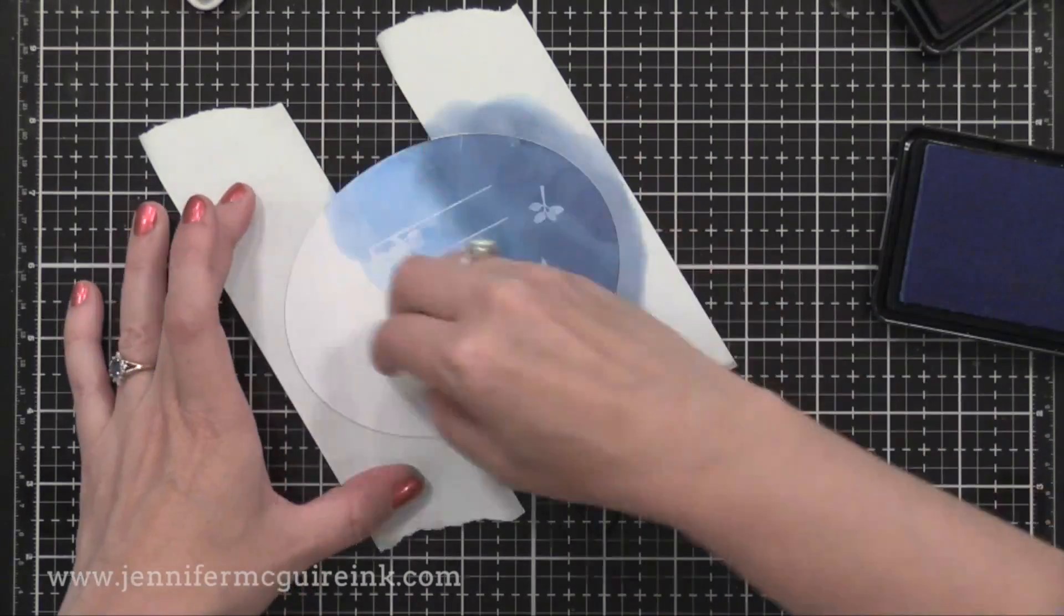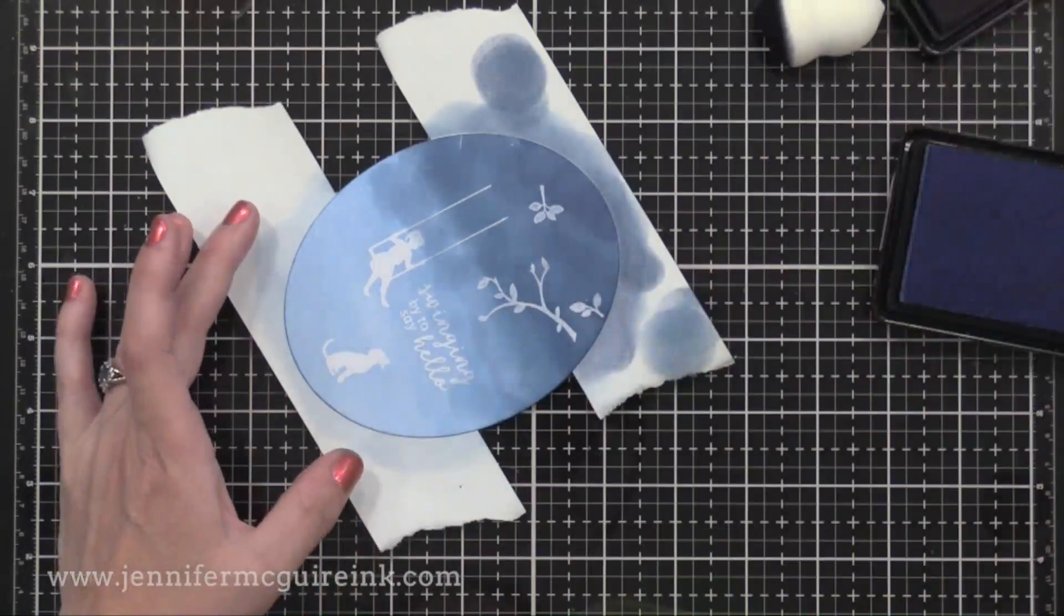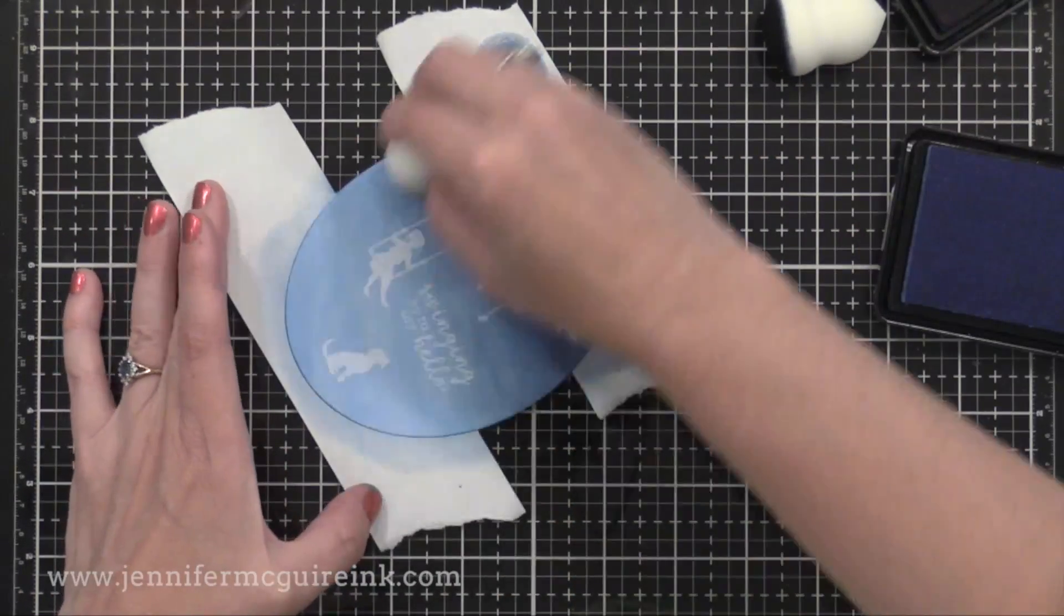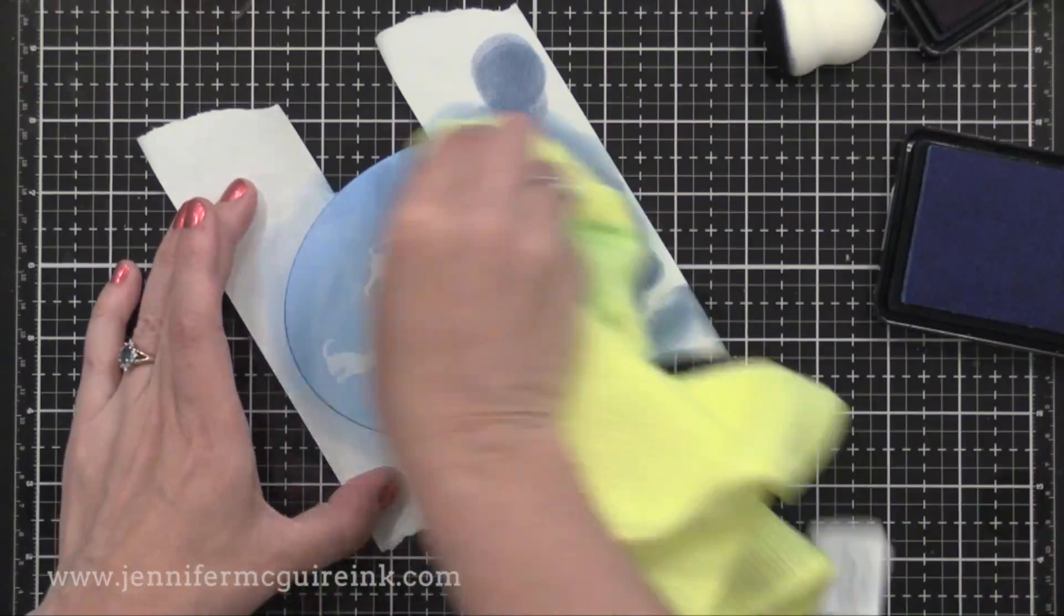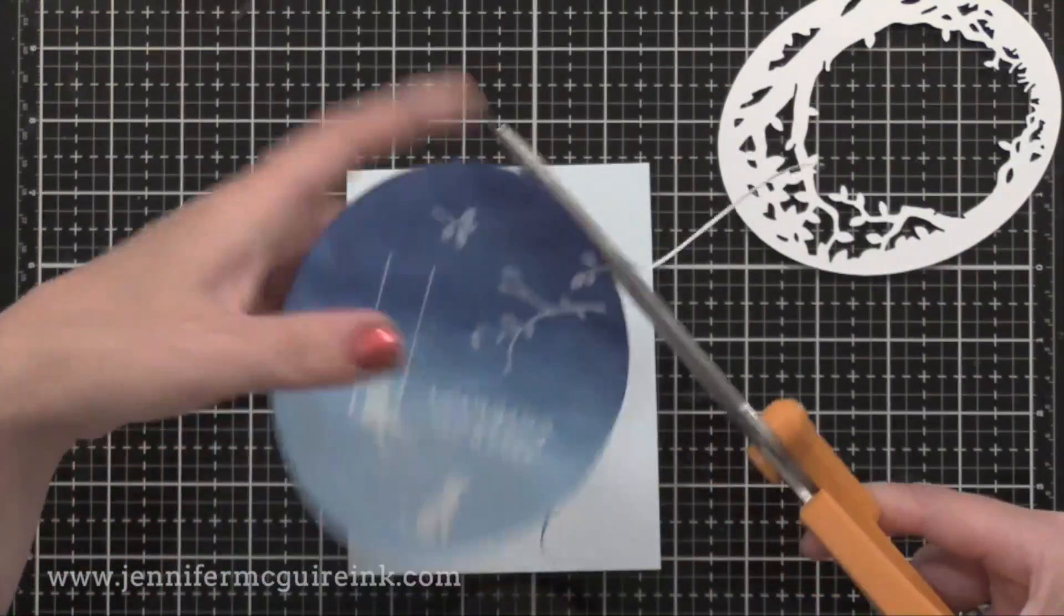So I'm applying navy to the top, cornflower to the middle and dusty blue to the bottom. And then I'm buffing off the excess ink. You can add more color if you prefer and you'll see the images magically appear. That's the traditional resist technique.